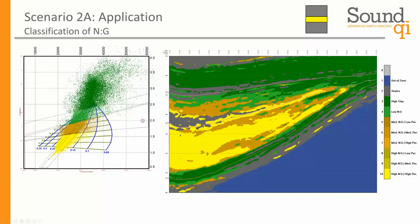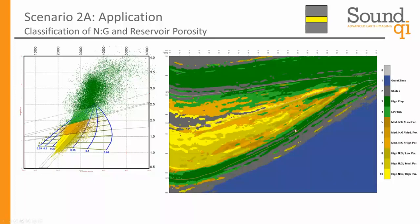Applying this to the seismic again — low net-to-gross in green, high in yellow — as we move away from the wells we can see a large reservoir wedge coming up onto a structure. As we get higher on the structure the wedge thins out and we get lower and lower net-to-gross ratios. We can also subdivide our best sands, our highest net-to-gross, based on porosity. Looking at these thicker sections, there are variations in porosity as well that we can use for reservoir development.